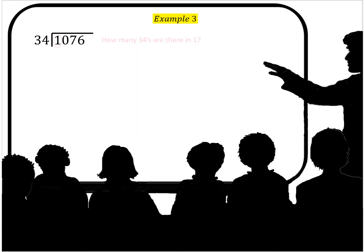Let's look at one more example. 1076 divided by 34. How many 34s go into 1? Zero. Multiply the zero times the 34, get zero. You subtract, you get 1. You bring down the zero.